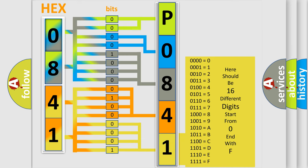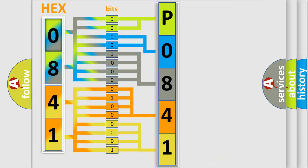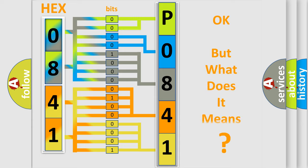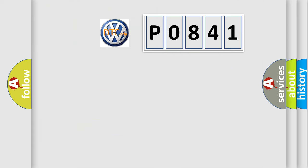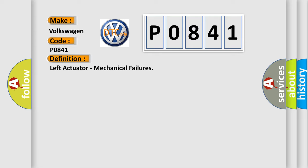We now know how the diagnostic tool translates received information into a more comprehensible format. The number itself does not make sense if we cannot assign meaning to what it actually expresses. So, what does the diagnostic trouble code P0841 interpret specifically for Volkswagen car manufacturers? The basic definition is: left actuator, mechanical failures.